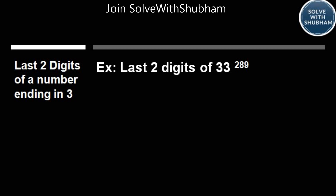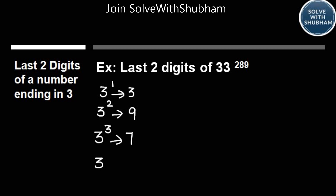We know that 3 power 1 ends in 3, 3 power 2 ends in 9, 3 power 3 ends in 7, and 3 power 4 ends in 1. We are going to try to convert this number into a number ending with 1. The moment that is done, we can use the concept from the previous class. So basically, 33 to the power 289 — we will try to convert it into a number ending with 1. Yes, it is possible because 3 power 4 is 81, which ends with 1.